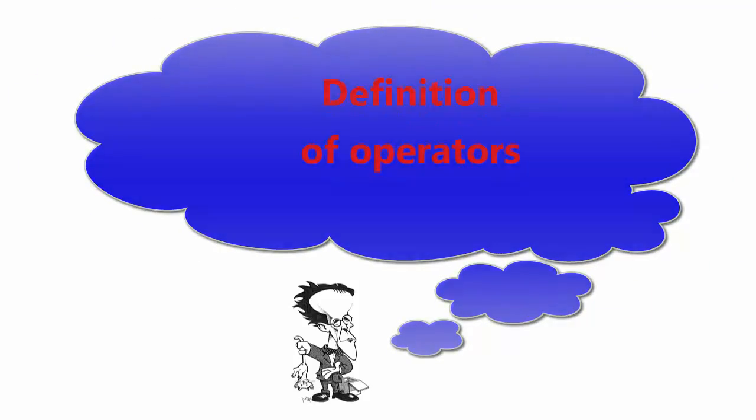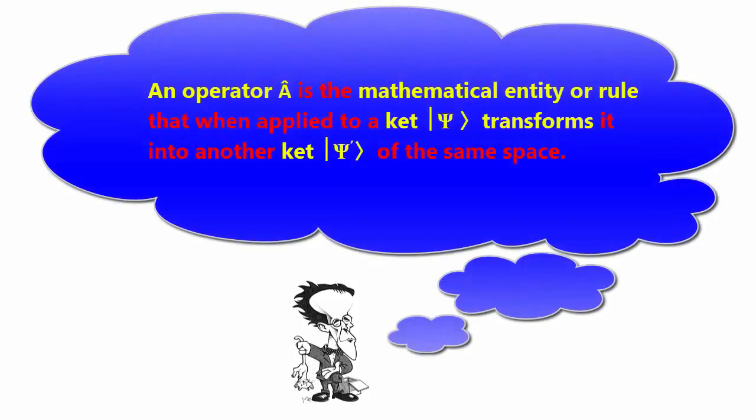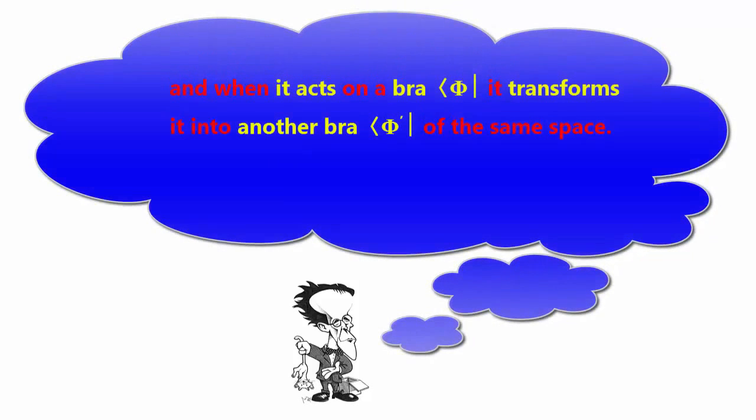Definition of operators: An operator A is the mathematical entity or rule that when applied to a ket, transforms it into another ket of the same space, and when it acts on a bra, transforms it into another bra of the same space.